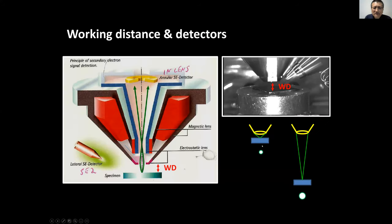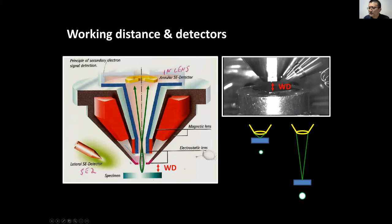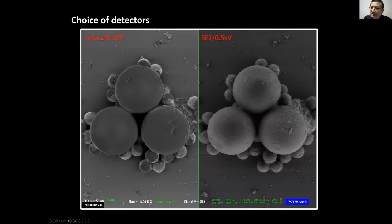Inside the SEM we have two main detector types. The in-lens detector is inside the column — that's why it's called in-lens. The other is called SE2, which is outside the column. Because they're at different locations, they give you slightly different information. Let's compare what the two detectors can do.